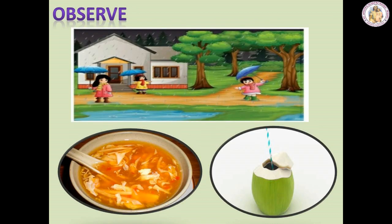Children, look at the picture. What season is it? It is the rainy season. What type of food do you prefer to eat during the rainy season — hot soup or tender coconut? Yes, you are right. Since it is very rainy, we have hot soup.